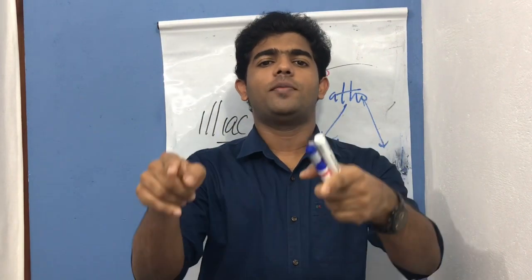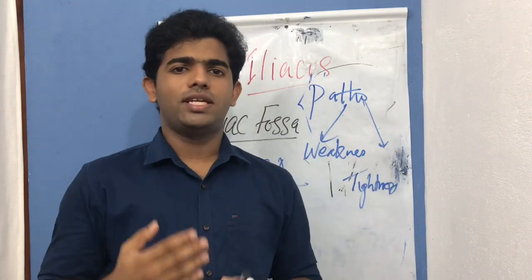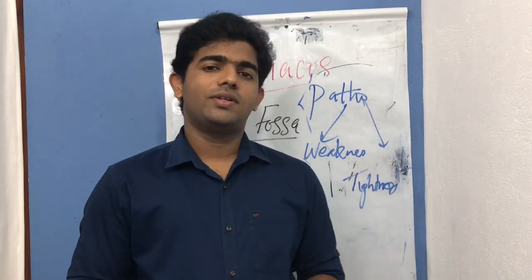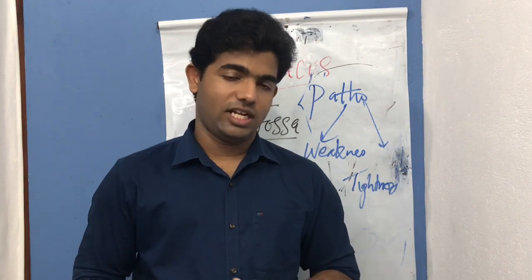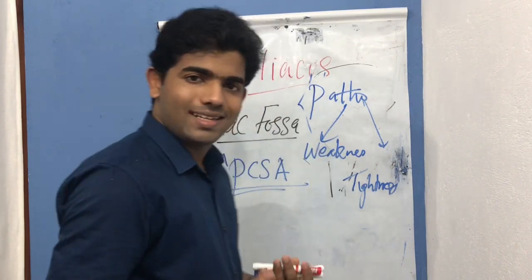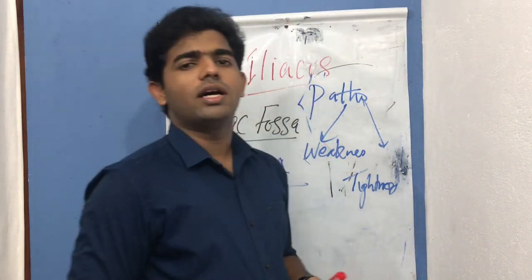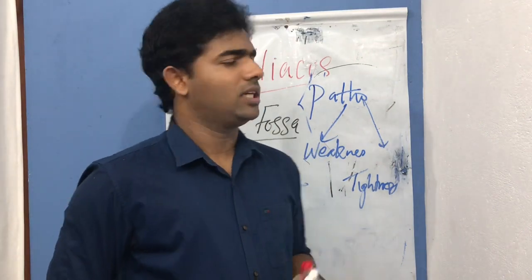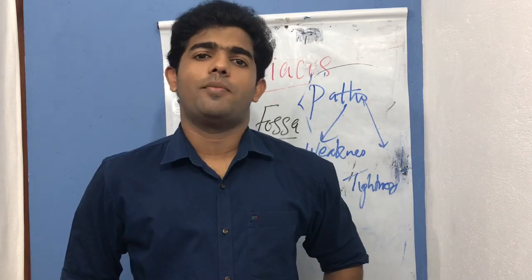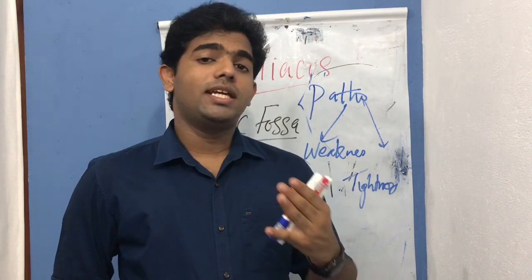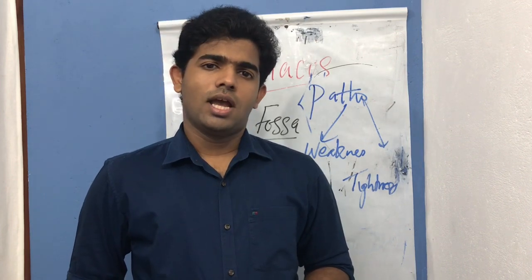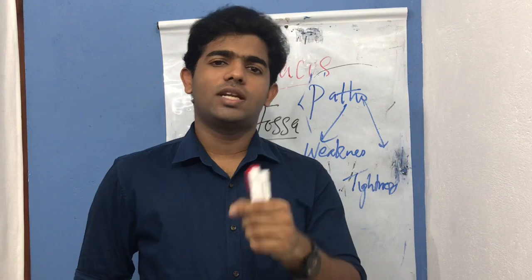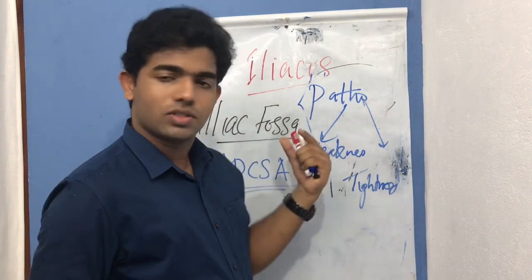In such functional activities there will be greater limitation when weakness of psoas major and iliacus is identified. But in normal gait it may not precipitate as much, because normal gait requires only about 38 degrees of hip flexion, and other muscles can compensate. A slight degree of weakness may not affect gait much, but complete weakness can produce significant problems.